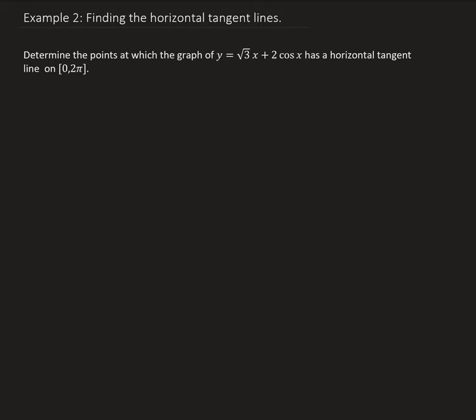In this example, we want to determine the points at which the graph of y equals square root of 3 times x plus 2 times cosine x has a horizontal tangent line from 0 to 2π. In order to find the horizontal tangent line, we need to take the derivative and set it equal to 0, because a horizontal line has a slope of 0. So we're going to set the derivative equal to 0.